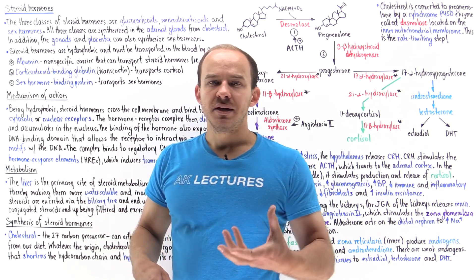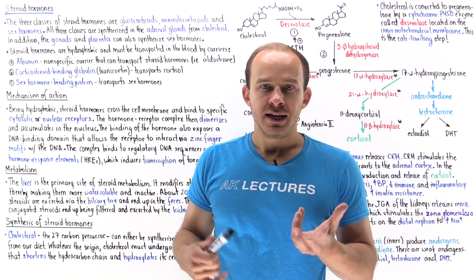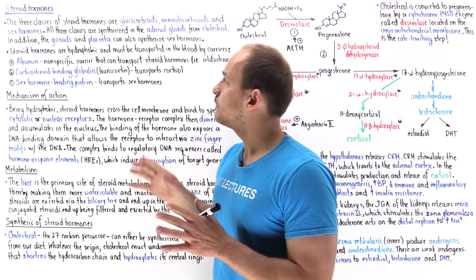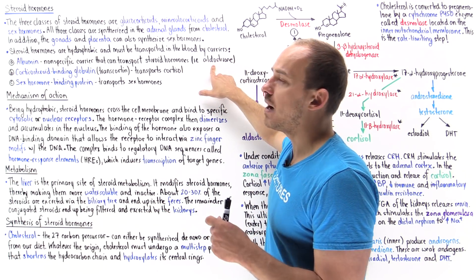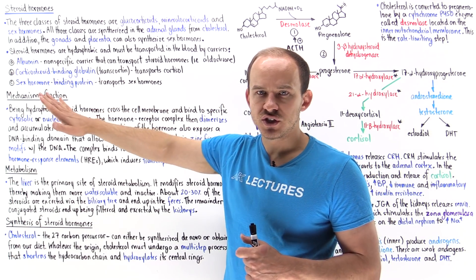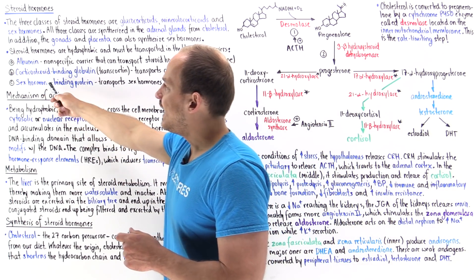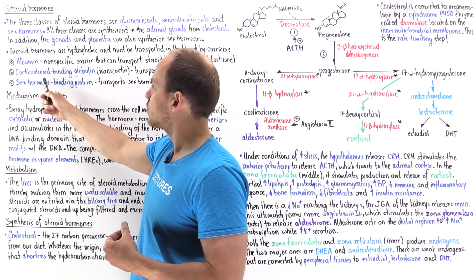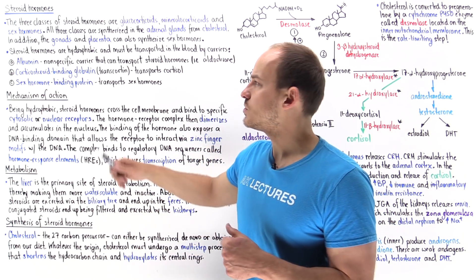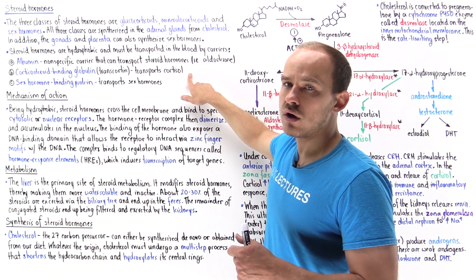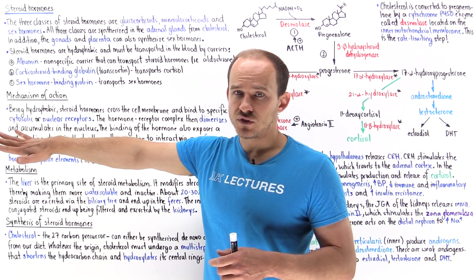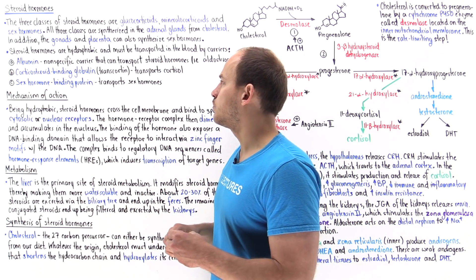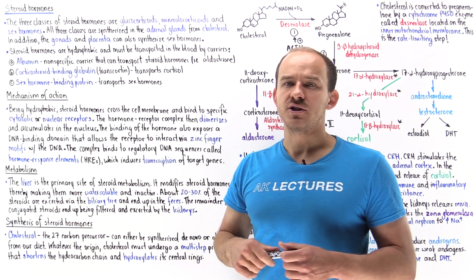Albumin is the major protein in the blood and it acts as a non-specific carrier for steroid hormones — for example, it can bind to aldosterone and move it to its target location. We also have more specific carrier proteins: corticosteroid binding globulin, also known as transcortin, which binds cortisol and moves it to its target location, and sex hormone binding protein, which can bind and transport sex hormones.